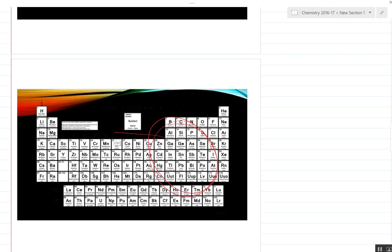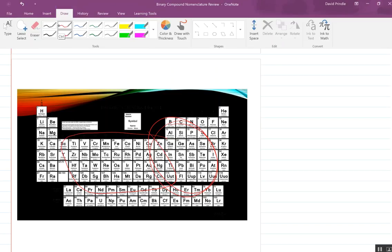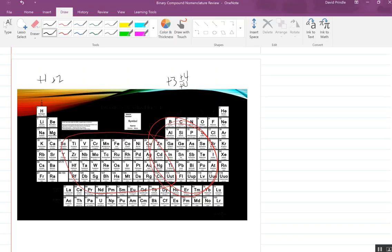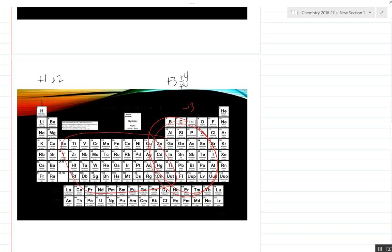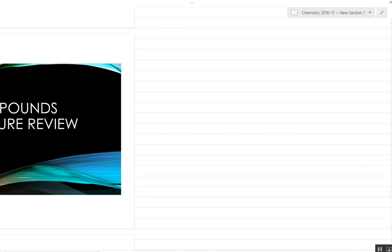Remember, this group here is plus one, this is plus two in most cases, this is plus three, but there's some plus or minus four. But in the metals case they're going to be plus four. And then we go down through and this would be minus three, minus two, minus one, and we don't worry about these guys here.